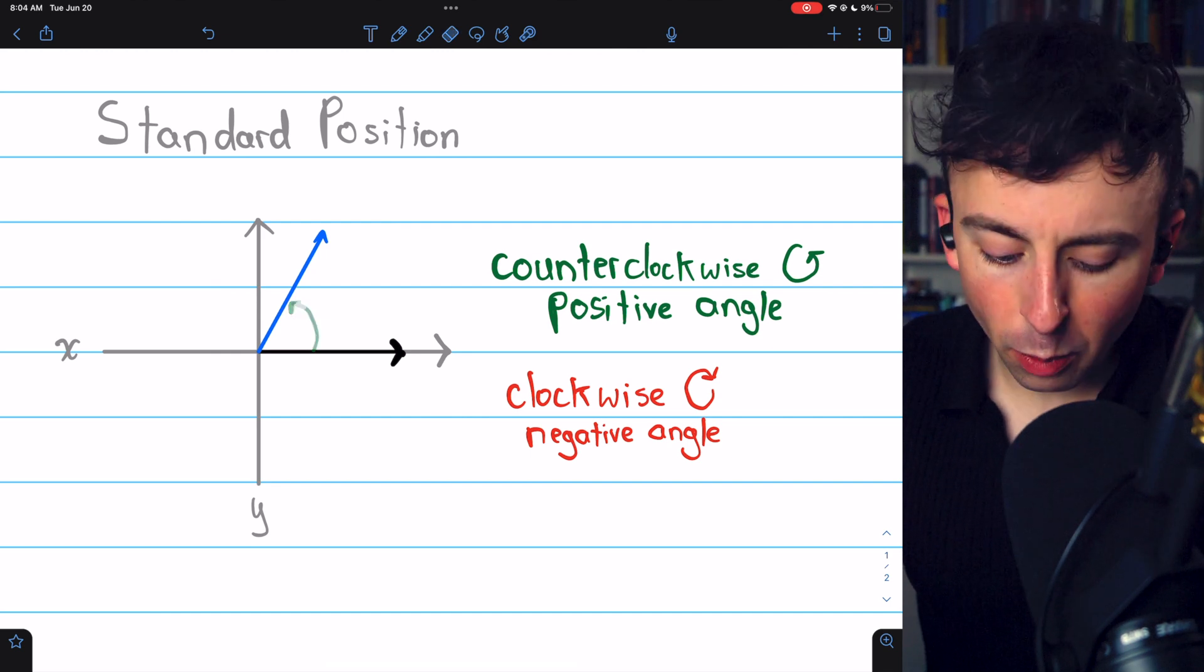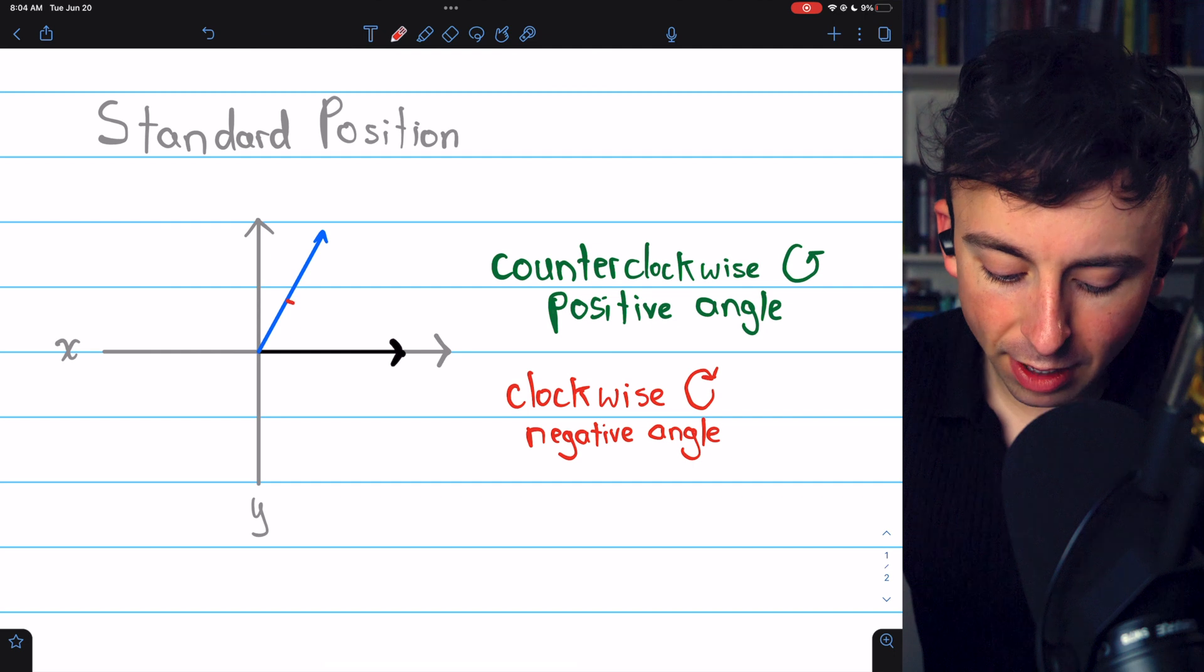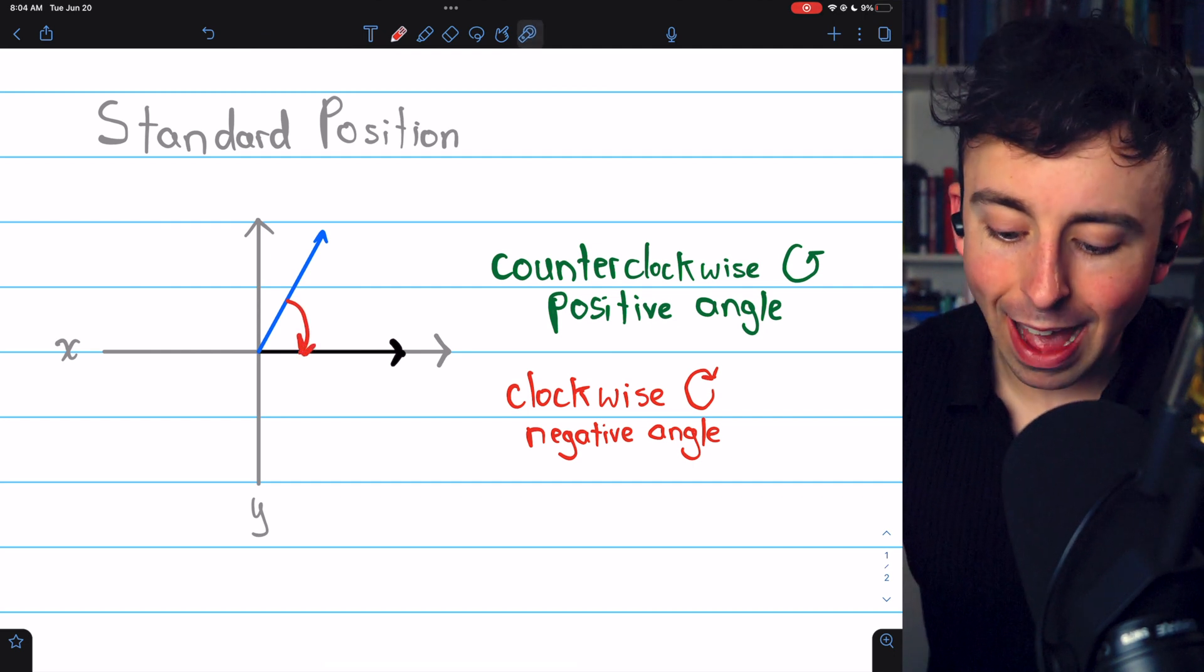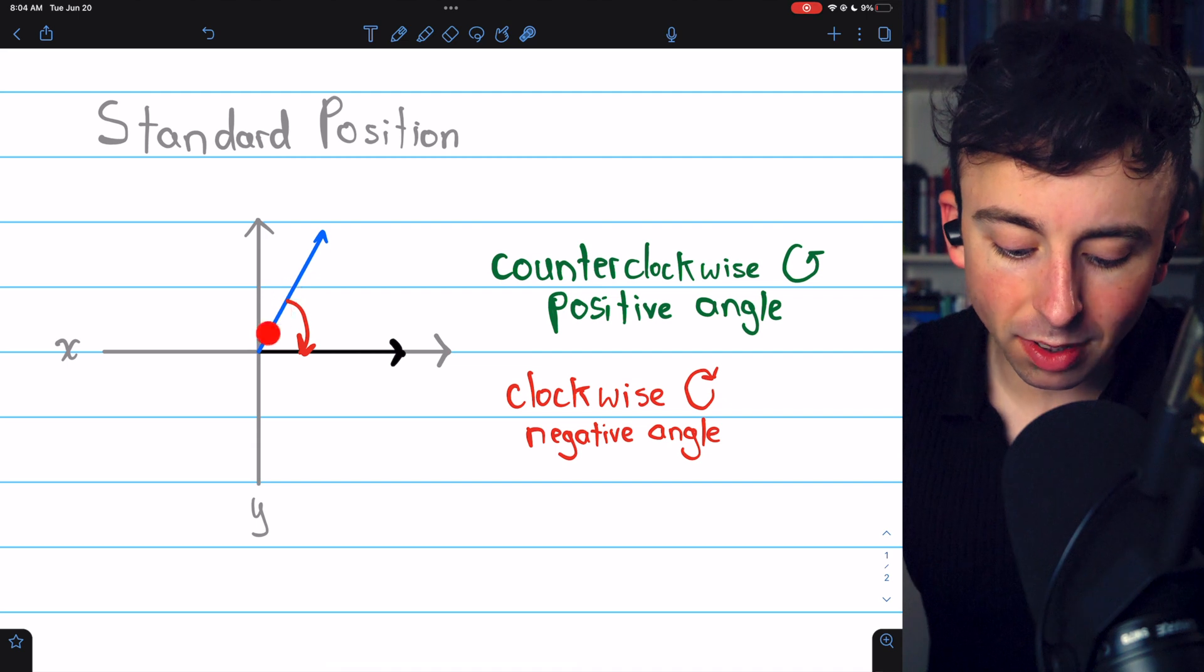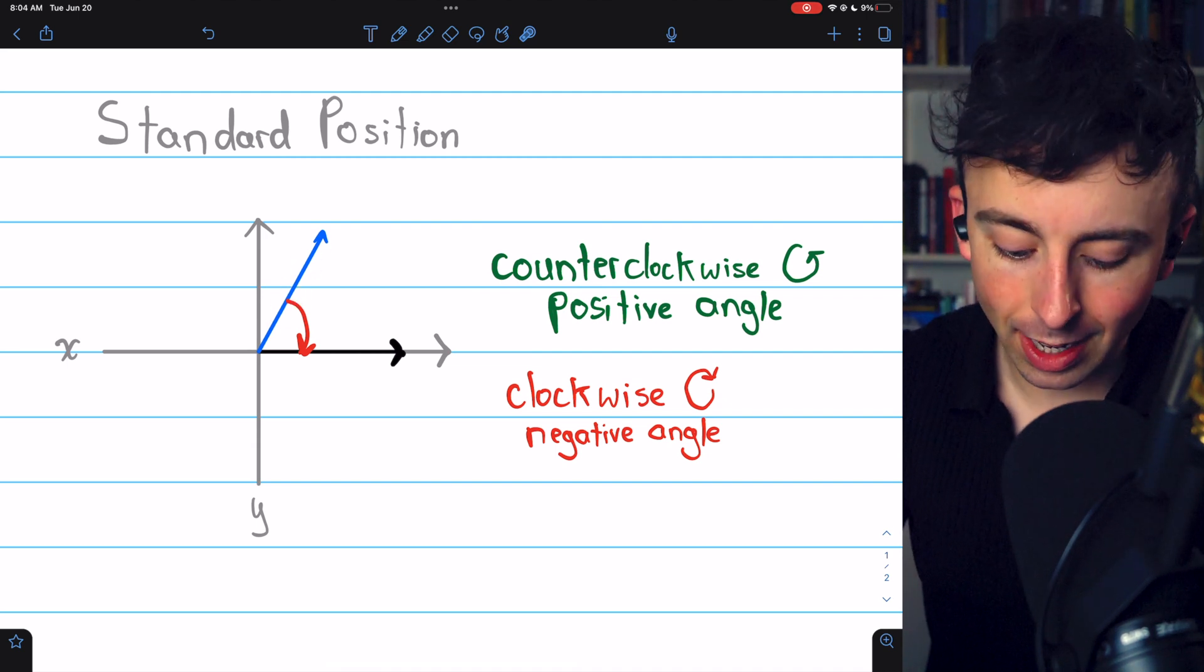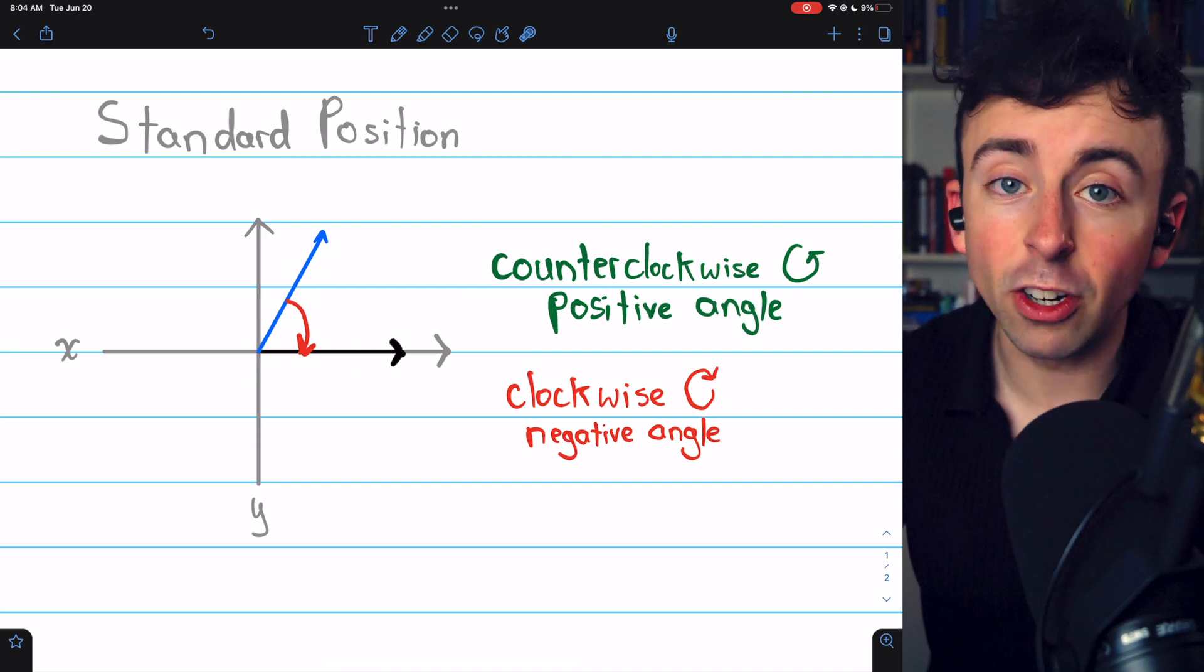If I were to draw an arrow in the other direction, this would indicate that my angle actually starts at the blue side. This means the blue side is now the initial side, and the black side is the terminal side.